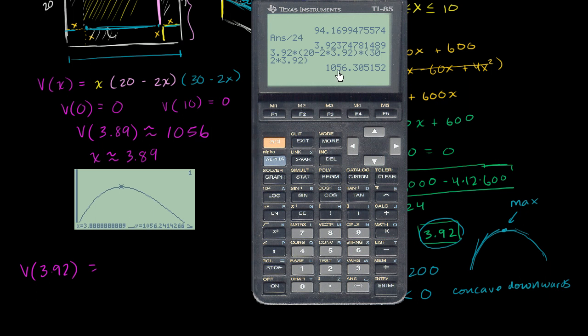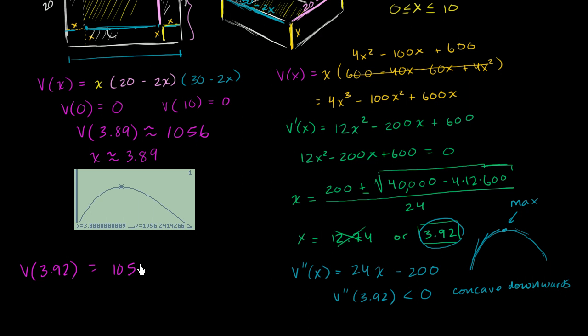And we deserve a drum roll now - gives us 1,056.3, which is a higher volume than we got when we just inspected it graphically. We probably could have gotten a little bit more precise if we zoomed in some, and then we would have gotten a little bit better of an answer, but there you have it. Analytically, we were able to actually get an even better answer than we were able to do, at least on that first pass, graphically.